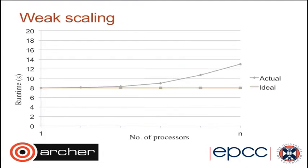Here is an example of weak scaling, which is quite a different graph from strong scaling. Here we plot the runtime against the number of processors. The ideal weak scaling curve is actually a very flat line — counterintuitive at first, but remember that with weak scaling we're increasing N with the number of processors, keeping the amount of work per processor fixed. So the runtime shouldn't change as we add processors. In practice, we see the runtime increase due to communication overheads.